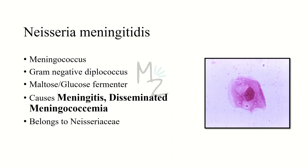Neisseria meningitidis — its other name is meningococcus. It is a gram-negative diplococcus, which means two cocci occur together and form a pair. It is responsible for fermenting maltose and glucose, making it a maltose and glucose fermenter. As its name suggests, it causes meningitis and disseminated meningococcemia. The most severe form is the life-threatening Waterhouse-Friderichsen syndrome. This bacterium belongs to the family Neisseriaceae.